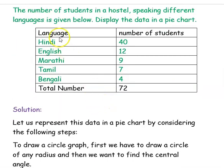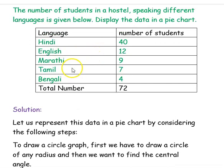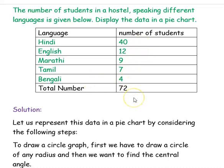Our next question is: the number of students in a hostel speaking different languages is given below. Display the data in a pie chart. The languages spoken are: Hindi by 40 students, English by 12 students, Marathi by 9 students, Tamil by 7 students and Bengali by 4 students. The total number of students is 72.